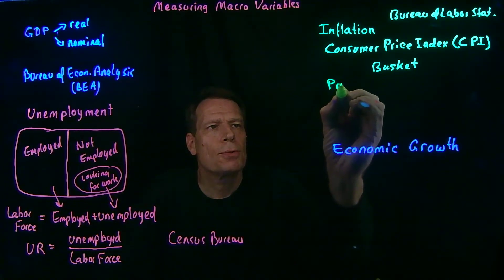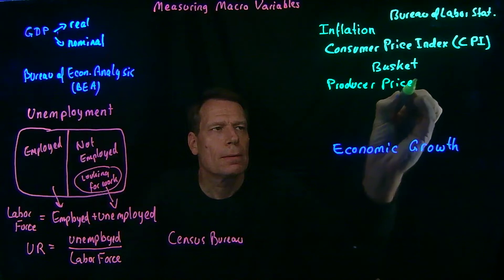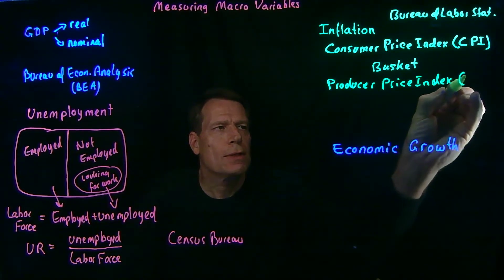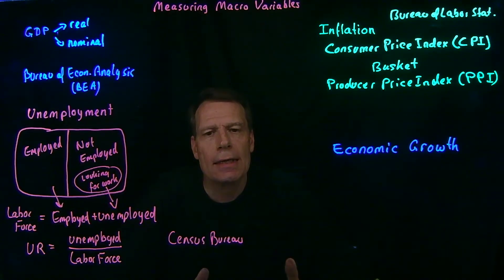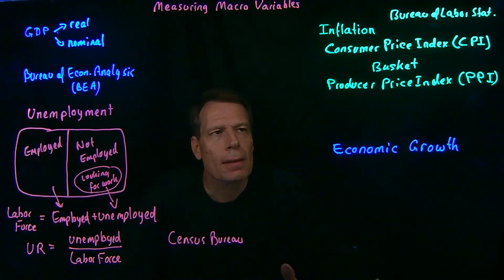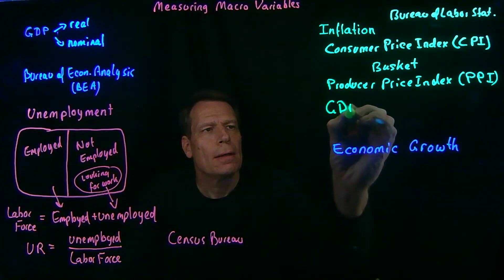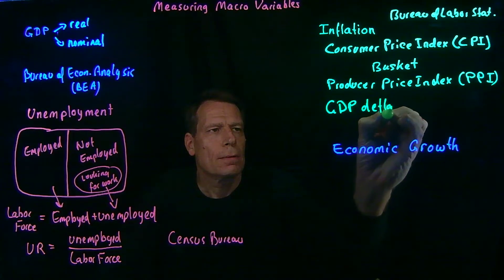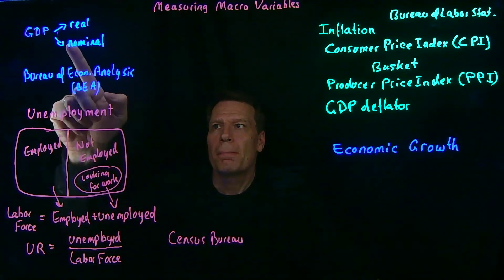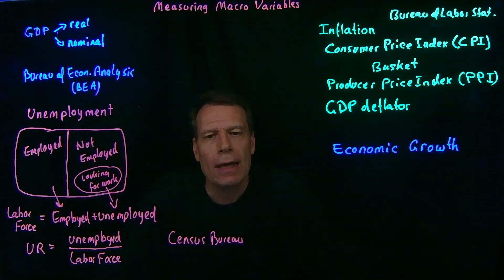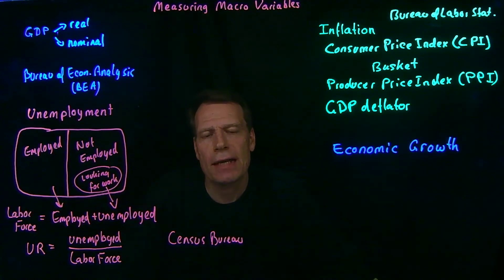We also have what's called the Producer Price Index, or PPI. It's exactly the same thing as the Consumer Price Index, except we're looking at prices that firms pay along the way of producing goods. Then we also have what's called the GDP deflator. Remember that we've calculated real GDP and nominal GDP. By calculating and comparing those, we can derive a measure of inflation over time. That measure is called the GDP deflator, and it's based on all the goods that are transacted in output markets.